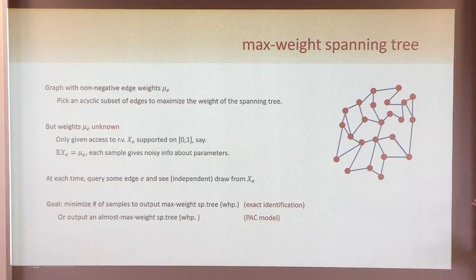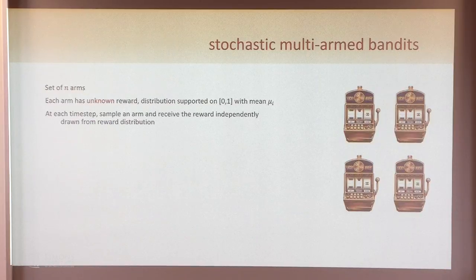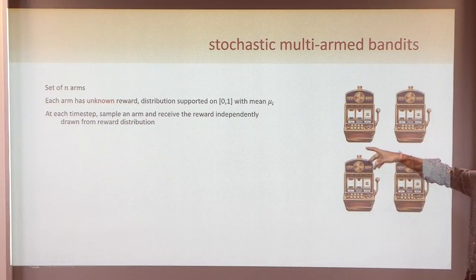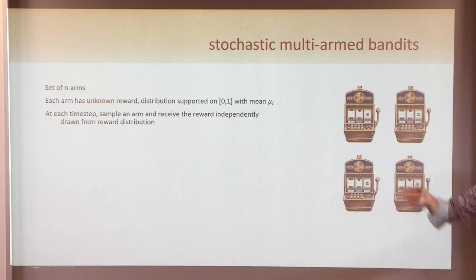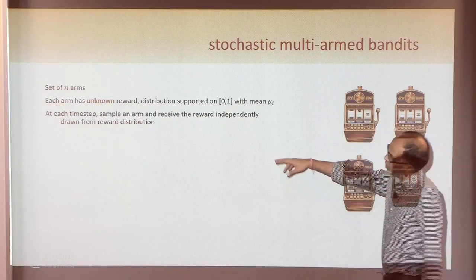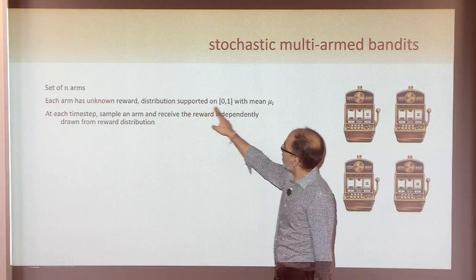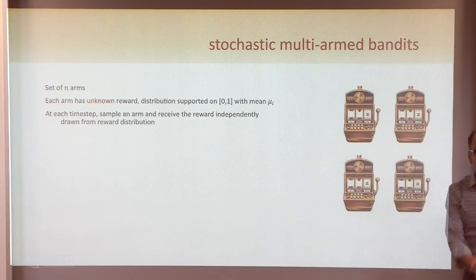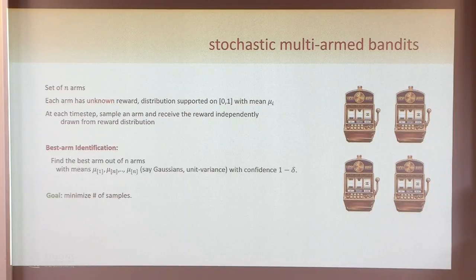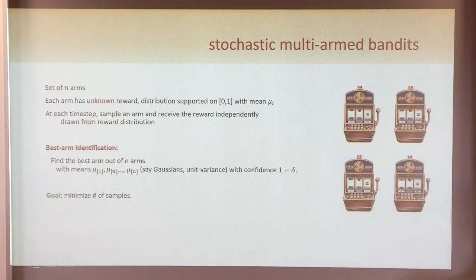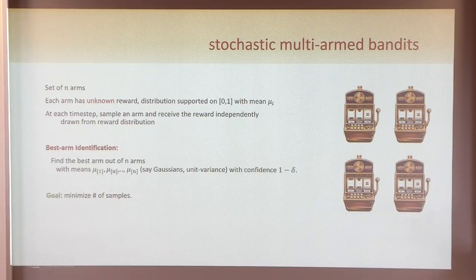This problem is a generalization of problems people have studied for quite some time. You've seen this under the stochastic multi-armed bandits problem, where you're given n arms, each arm has an unknown reward distribution — think of these as the mu_i's — and you want to pick the best one, the one with the highest average. You pull a bunch of arms; you can solve regret minimization. What I'll be looking at is the best arm identification problem: find the one which is the best with high probability.